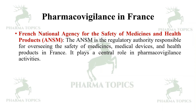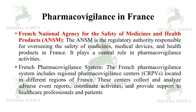In France, the National Agency for the Safety of Medicines and Health Products (ANSM) is the regulatory authority responsible for overseeing the safety of medicines, medical devices, and health products. It plays a central role in pharmacovigilance activities. The French pharmacovigilance system includes regional pharmacovigilance centers located in different regions of France, which collect and analyze adverse events, coordinate activities, and provide support to healthcare professionals and patients.